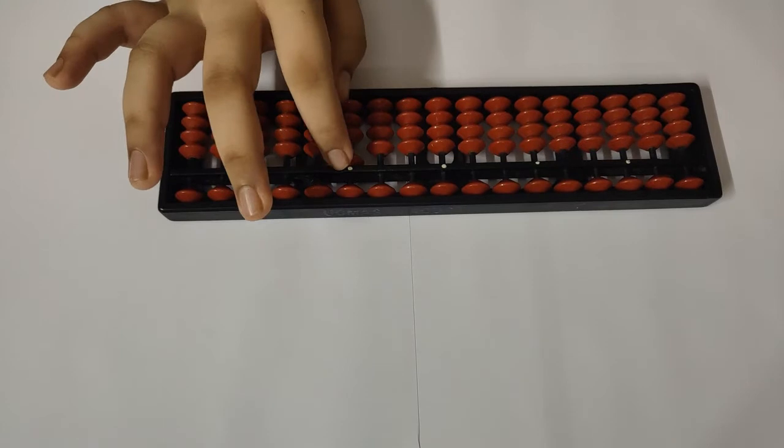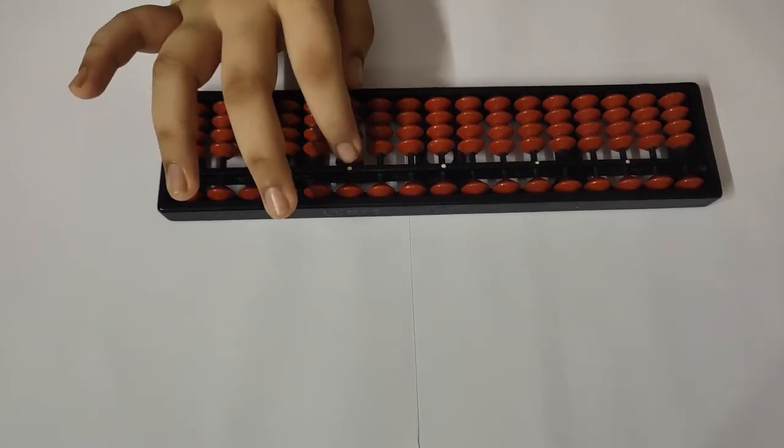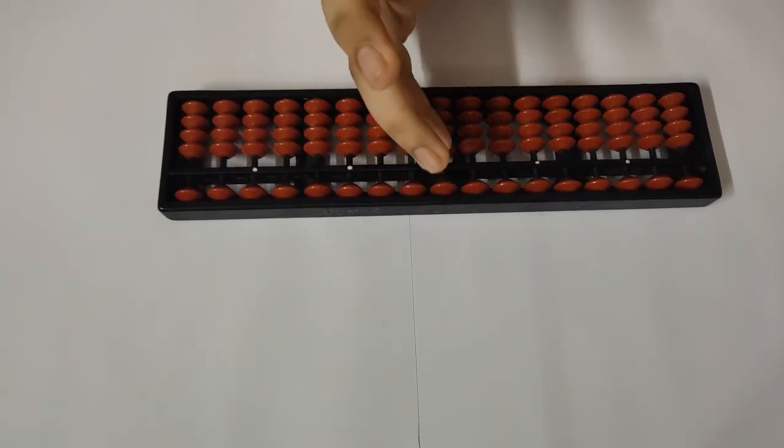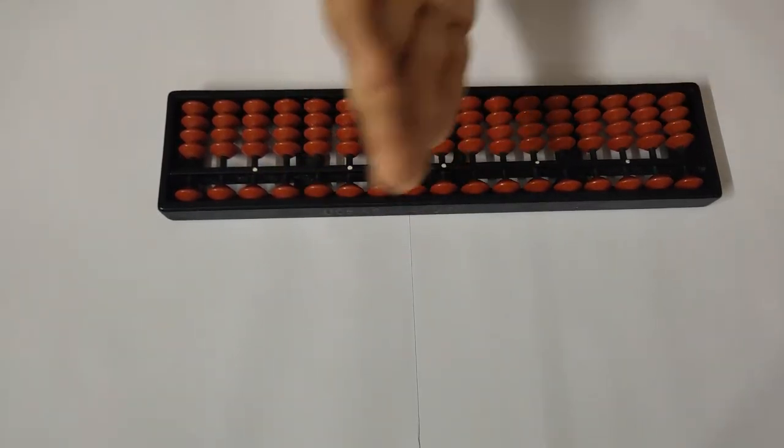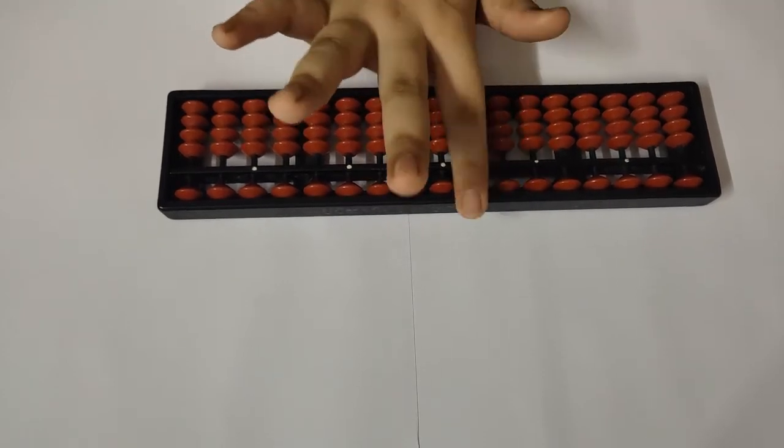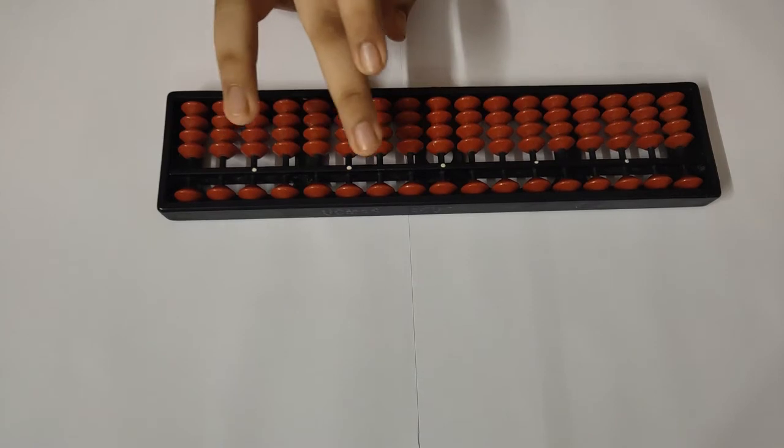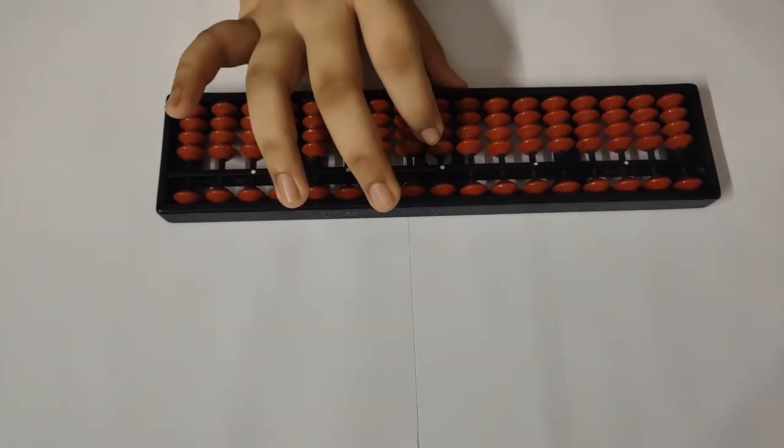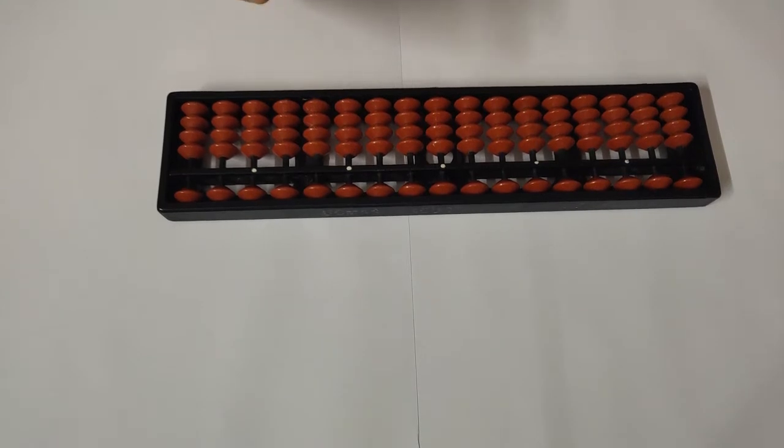Suppose if you're considering this column, the one will be here. Now this is one's place. The left column is considered as tens. If you consider this as one's, then this is tens, and so on. Now first of all, we will start with one's place.